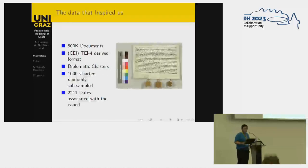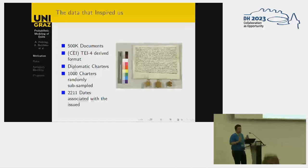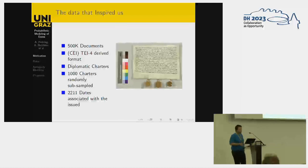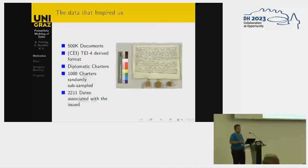The data that inspired us is the Monasterium Corpus, which is half a million documents, all CI charters. Out of those, we took 1,000 charters randomly for quality control of our corpus. We found 2,211 dates that were associated with a specific that.